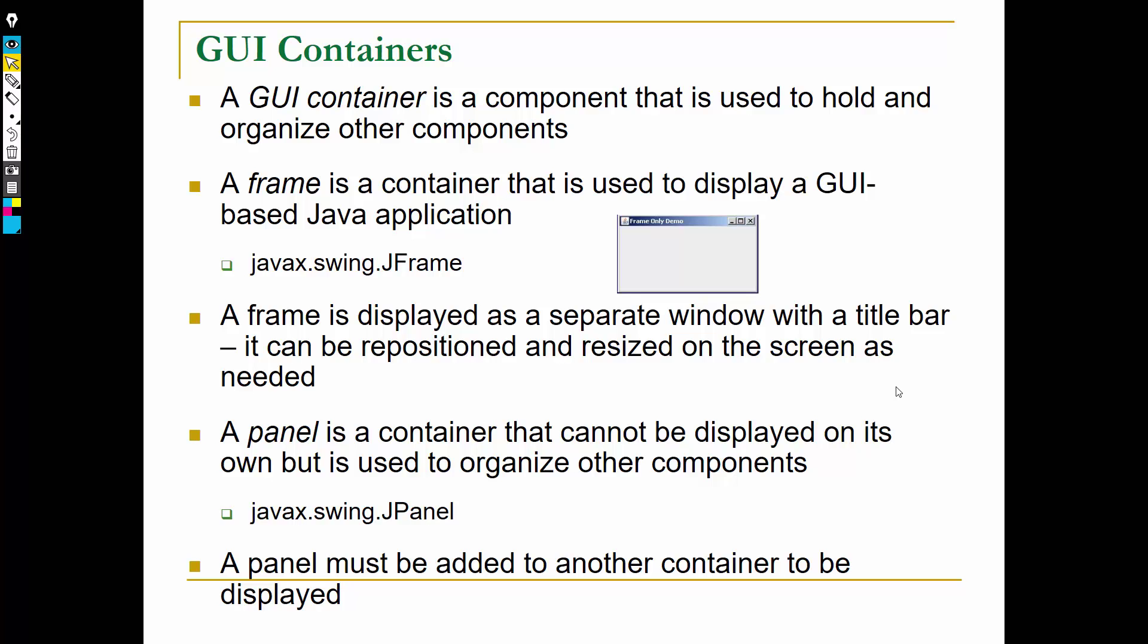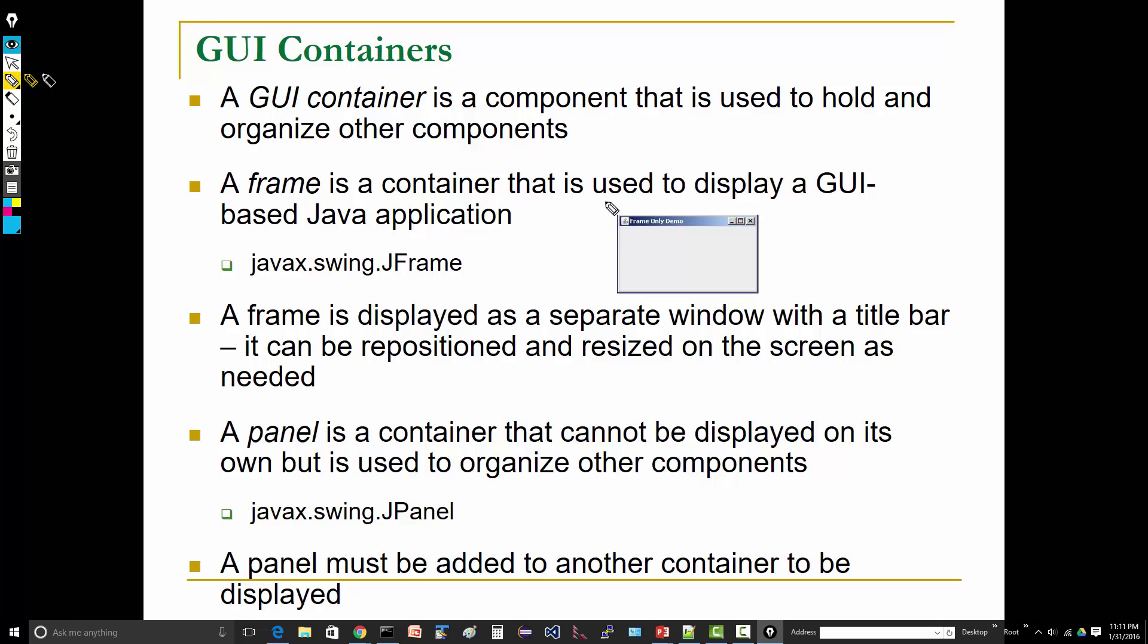So a fundamental thing to get your head around is this idea that components or widgets are placed in containers. A frame or a window is the most common container. The one that we will be using is called a JFrame, and the fully qualified name is javax (Java extension) dot swing dot JFrame. You'll see this with all the Swing components: javax dot swing dot JFrame, dot JButton, dot JPanel, dot JTextField.